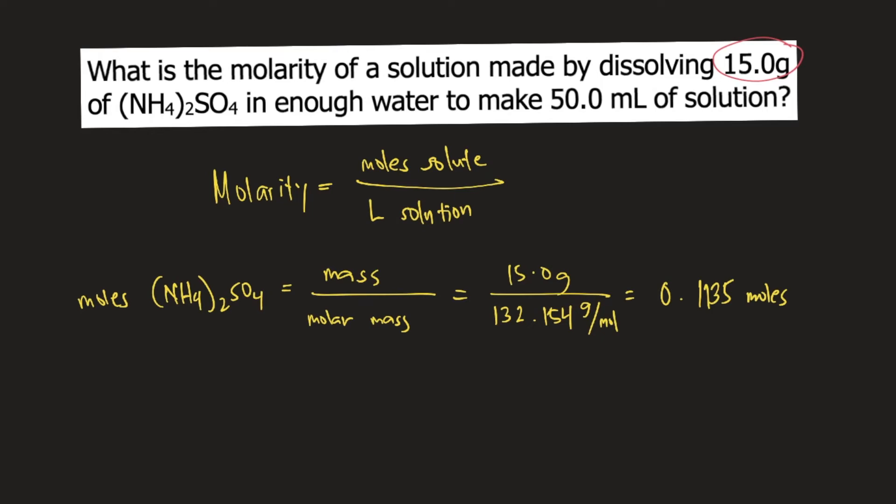Next, we need the liters of solution. In the problem, we're given 50 mL of solution. We need to convert 50 mL to liters. We know that 1 liter equals 1,000 mL, so mL will cancel, and this equals 0.0500 liters.